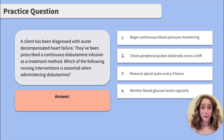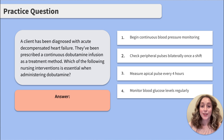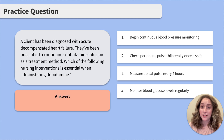Moving on to option number three: measure an apical pulse every four hours. While measuring an apical pulse can be useful, it is not essential to the administration of dobutamine. The client will require continuous cardiac monitoring to make sure they don't develop dysrhythmias with the medication. Last answer choice, four: monitor blood glucose levels regularly. While monitoring blood glucose levels is important in certain clients, it is not directly related to the administration of dobutamine.